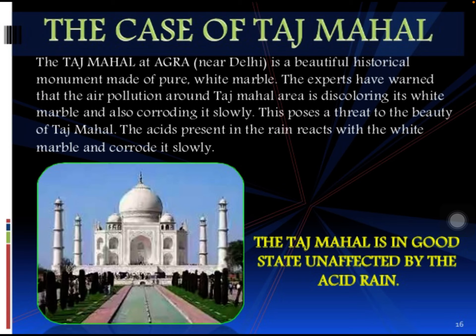Let us take the case of the Taj Mahal. The Taj Mahal at Agra, near Delhi, is a beautiful historic monument made of pure white marble. When acid rain was not present, the Taj Mahal appeared brilliantly pure white and very beautiful. However, experts have warned that air pollution around the Taj Mahal is discoloring its white marble and corroding it slowly, posing a threat to its beauty.